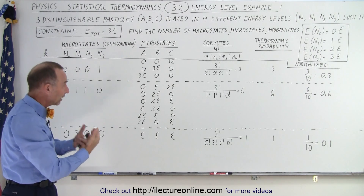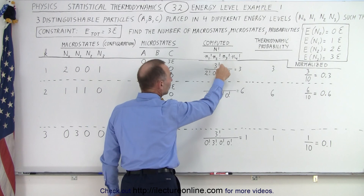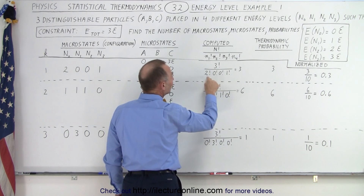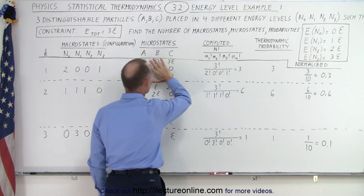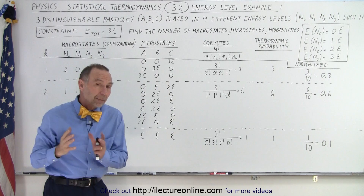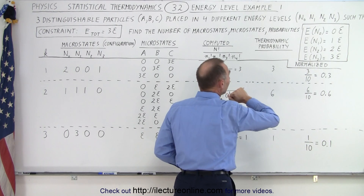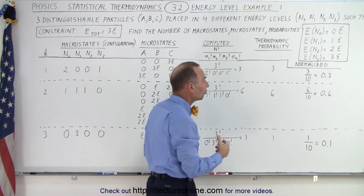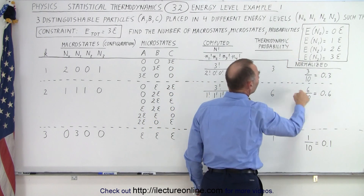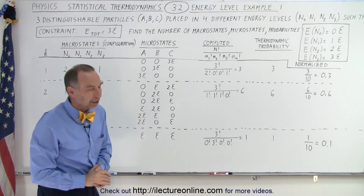If we want to use the mathematical method to compute the number of microstates, we take the total number of particles — three factorial — divided by the factorials of how many we have in each level: two in the zero level, zero in the one level, zero in the two level, and one in the three level. That comes out to three microstates, which matches. The thermodynamic probability is three, and since there are a total of 10 different microstates across all configurations, the normalized thermodynamic probability would be 0.3, or 30% of the time we would have this configuration.